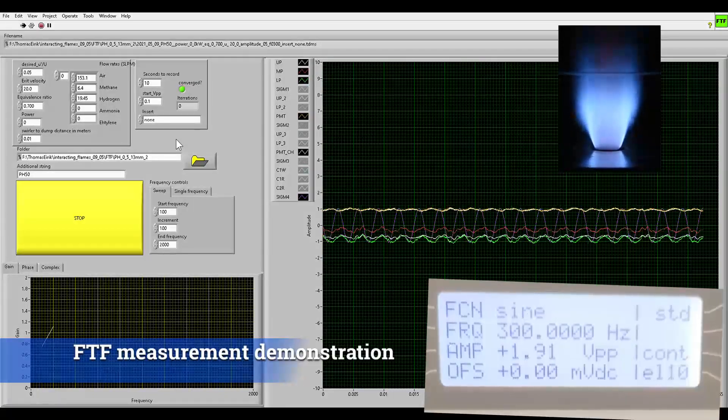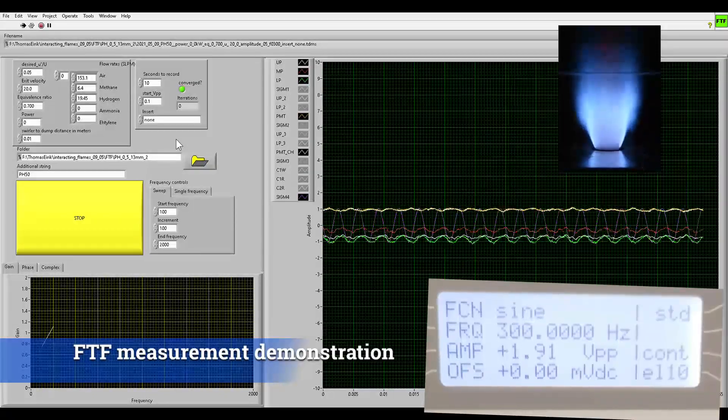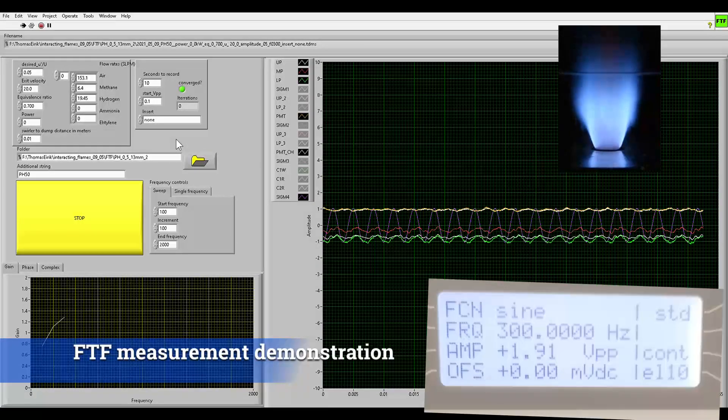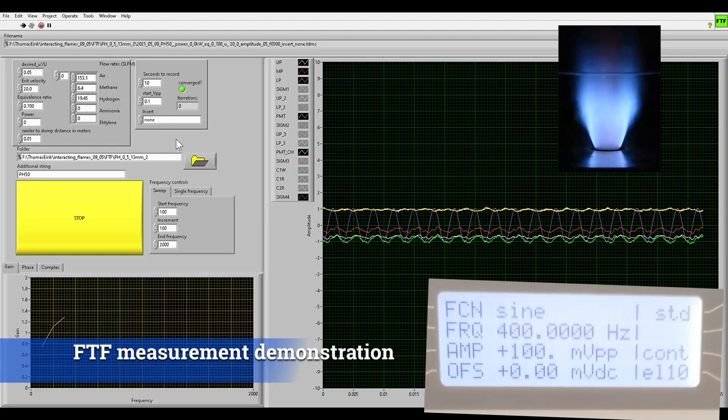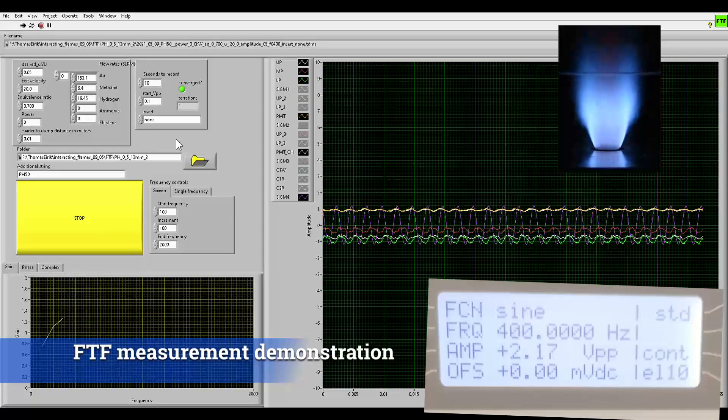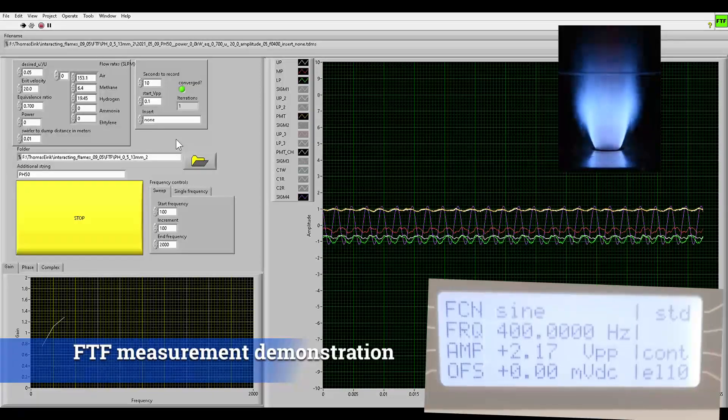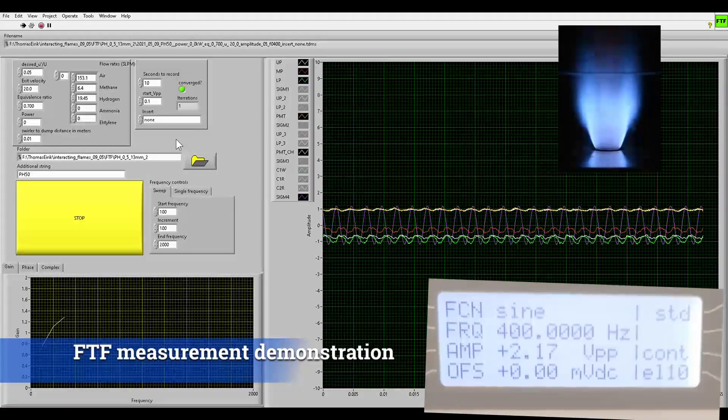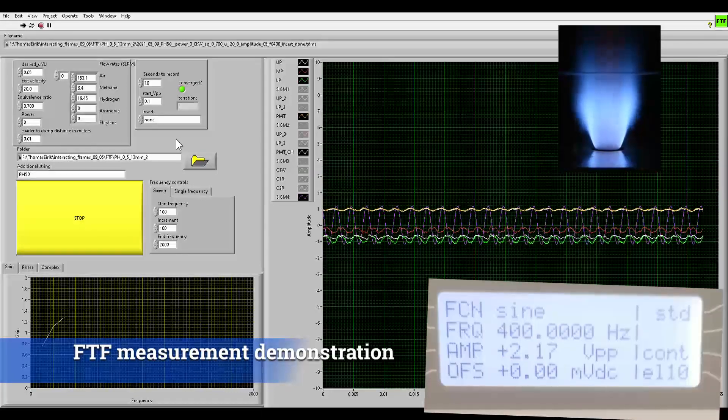The FDF is computed at each frequency and is displayed in the plot on the bottom left of the screen. Displaying the FDF as it's acquired is useful for identifying any faults in the equipment or any bugs in the code. The multiple microphone method is implemented in the VI to compute the amplitude of velocity fluctuations and the voltage is iteratively adjusted to achieve the target amplitude.